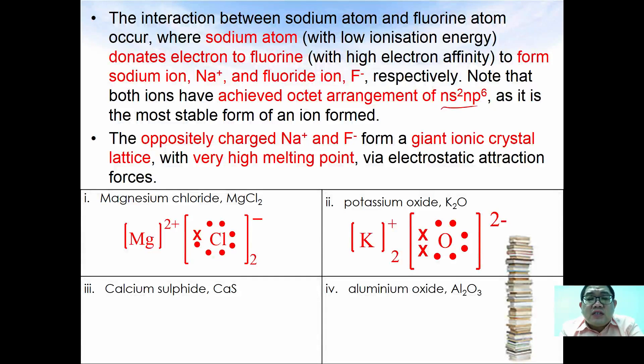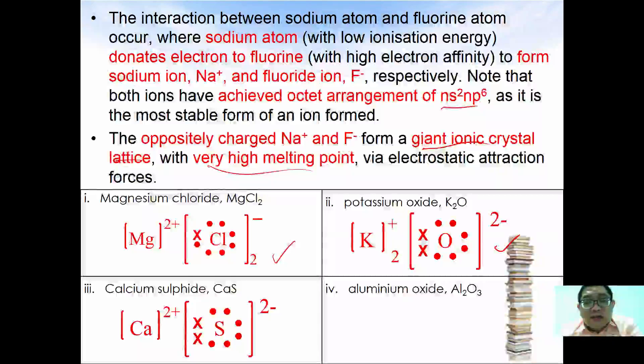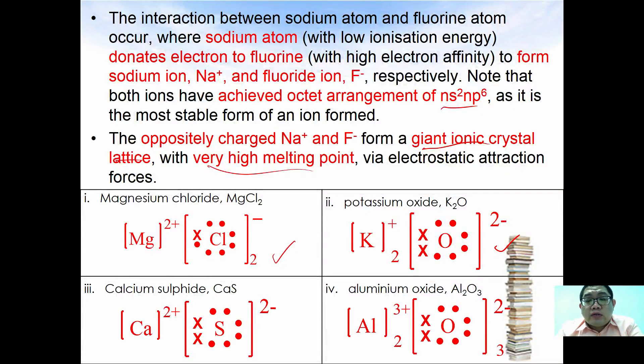The oppositely charged Na⁺ and F⁻ form a giant ionic crystal lattice with a very high melting point by electrostatic attraction forces. Other examples of substances that form ionic bonds are magnesium chloride MgCl₂, potassium oxide K₂O, calcium sulfide CaS, and aluminum oxide Al₂O₃. This is how we express their Lewis structure for each of the respective ions involved.